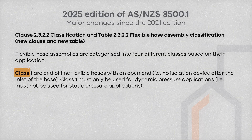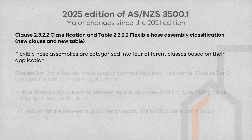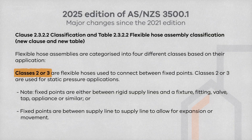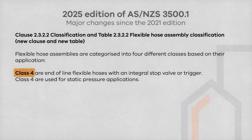For Class 1, these are end-of-line flexible hoses with open ends, having no isolation devices after the inlet of the hose. Class 1 must only be used for dynamic pressure applications, not static pressure applications. For Class 2 or 3, flexible hoses are only to be used to connect between two fixed points — such as between a pipe and fixture, fitting, valve or tap — and are used for static pressure. For Class 4, they are end-of-line flexible hoses with an integral stop valve or the like, and are used for static pressure applications.